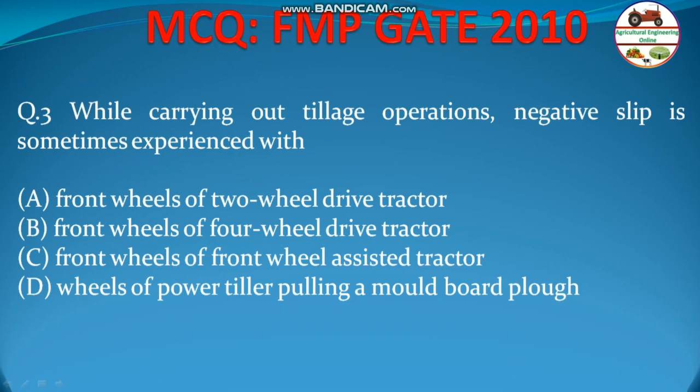Question number 3 states: while carrying out tillage operations, negative slip is sometimes experienced with — (a) front wheel of two-wheel drive tractor, (b) front wheels of four-wheel drive tractor, (c) front wheels of front wheel assist tractor, or (d) power tiller pulling a moldboard plow. You need to understand what the different options are.